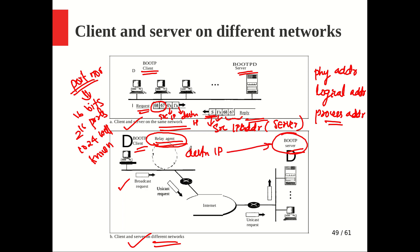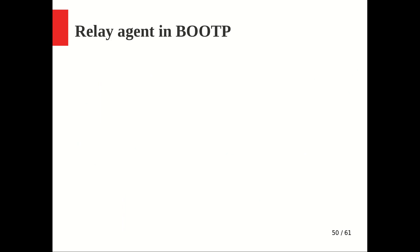The relay agent takes the broadcast request and sends it as a unicast message to the other network, using the actual BOOTP server's IP address as the destination. This allows the message to cross routers via normal routing. The router runs the routing algorithm and delivers the message to the BOOTP server. The server looks up its table for the mapping and sends a unicast reply back. The relay agent's address is included in the message so the server can reply correctly.